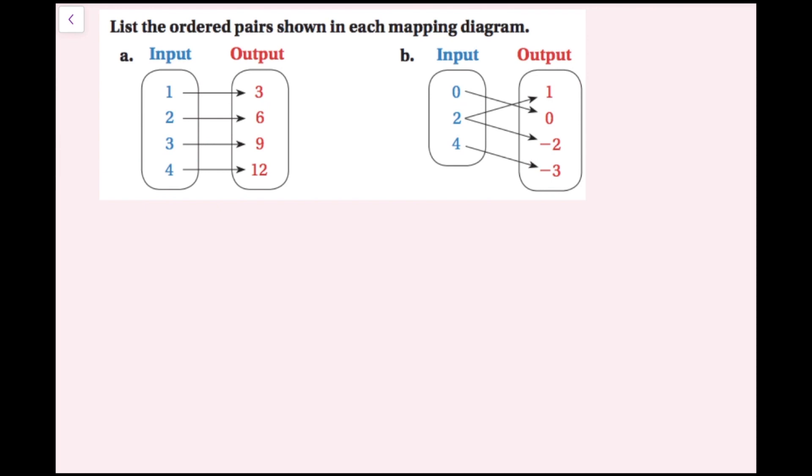For this example, we're going to list the ordered pairs shown in each mapping diagram. My input here is 1, and it goes to a 3, so that's going to be the ordered pair 1 comma 3. Then here I have an input of 2 that goes to 6, so that's going to be 2 comma 6. Then I have 3 that goes to 9, 3 comma 9. And then 4 goes to 12, so the input's 4, output's 12, that's going to be 4 comma 12. So now I listed all the ordered pairs for part a.